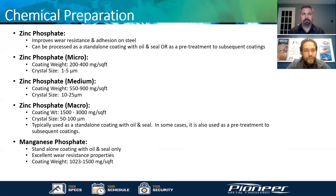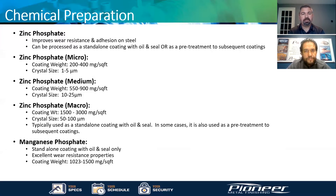We also have manganese phosphate available in our facility. This is a different type of chemistry with a larger coating weight from 1000 to 1500 milligrams per square feet. It is an excellent phosphate for wear purposes and rust resistance — better than zinc phosphate.